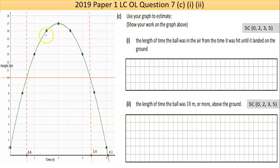Part C here is looking to use the graph to find things out. It says, use your graph to estimate, and you must show the work on the graph. That's one of the most important things, with lines and dotted lines. Part one says, the length of time the ball was in the air from the time it was hit until the time it landed on the ground. Basically all of this value here. How long was it in the air? It was in the air for a little over four seconds.